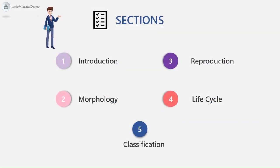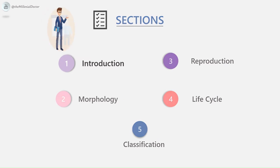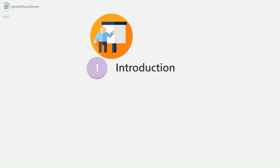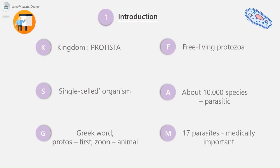Introduction, morphology, reproduction, life cycle, and classification. First, let's study the introduction. Protozoa belong to the kingdom Protista. A protozoal parasite is a single-celled organism which is morphologically and functionally complete. The word protozoa comes from the Greek word 'protos', which refers to 'first', and 'zoan', which refers to 'animal'. Parasitic protozoa are adapted to different host species. Free-living protozoa are found in all habitats including deep ocean, shallow fresh waters, hot springs, ice, soil, and mountain tops.